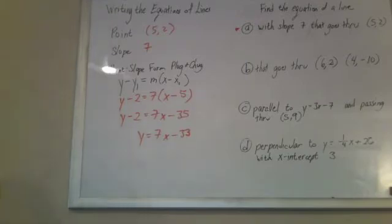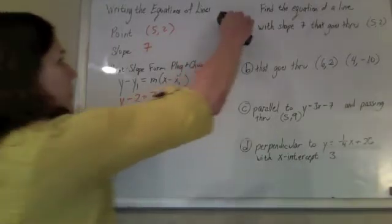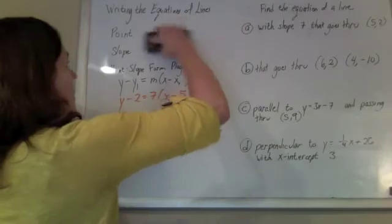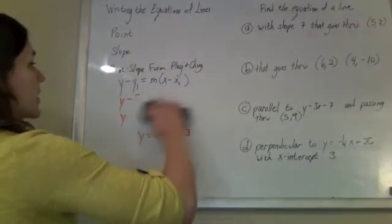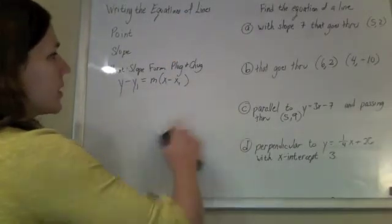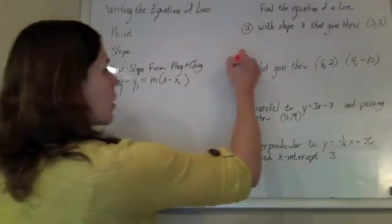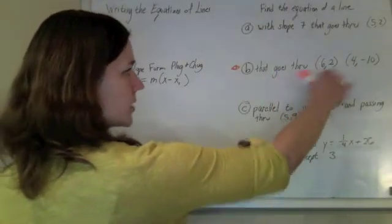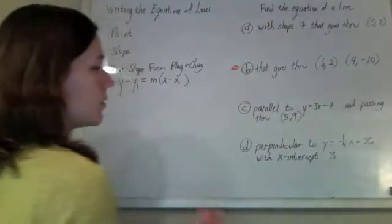So that's that one. And the next one, a little bit ruder, they didn't hand us the slope this time. So if you're looking at this one, all we know is that it goes through the points 6, 2, and 4, negative 10.